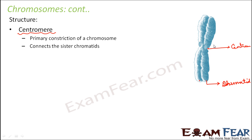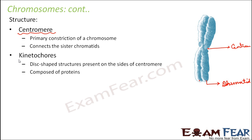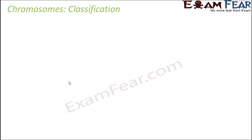The centromere connects the two sister chromatids. There is another structure called the kinetochore. These are disc-shaped structures present on the sides of the centromere. At the central region where the two chromatids are connected, you can see disc-like structures known as kinetochores, and they are composed of proteins.